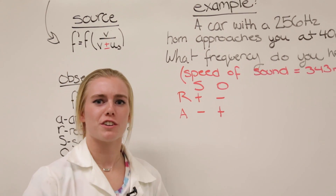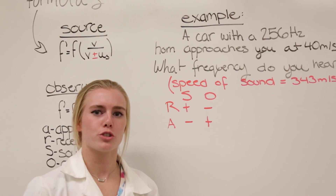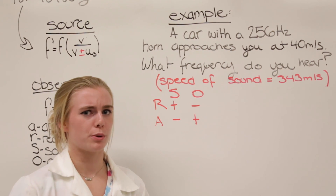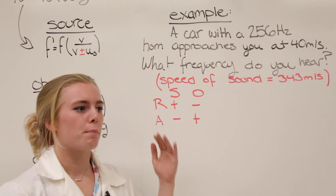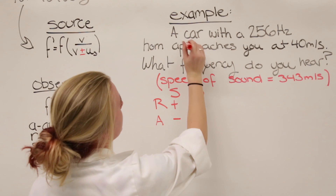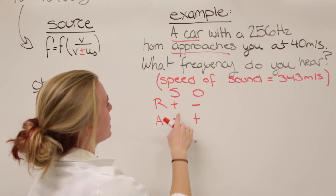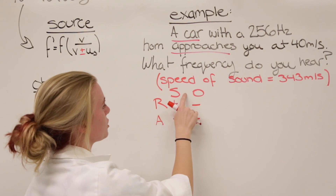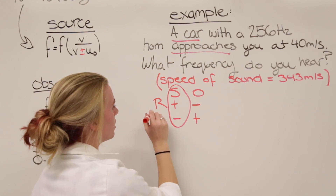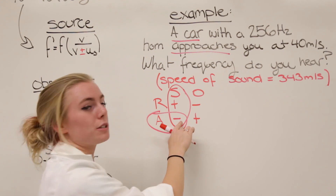A car with a 256 hertz horn approaches you at 40 meters per second. What frequency do you hear? Because we know that this is a source — which is the car — and it is approaching you, we know that if this is a source and it is approaching, it is going to be negative.